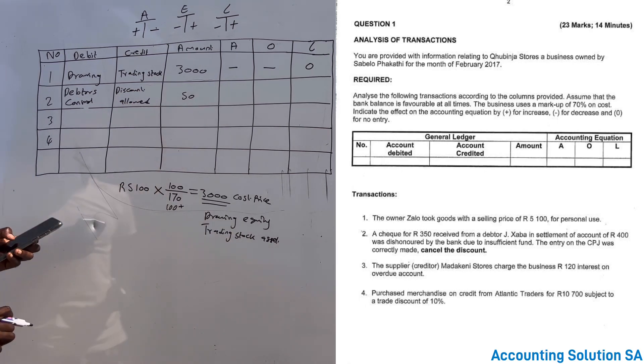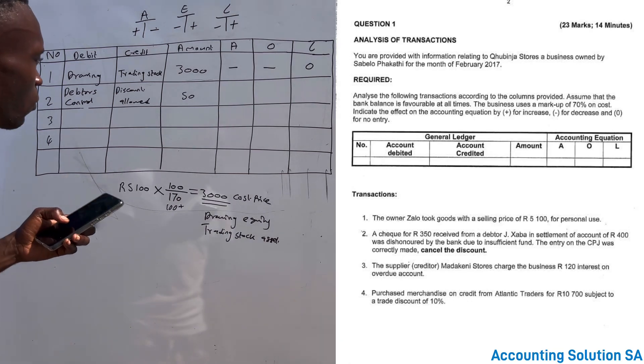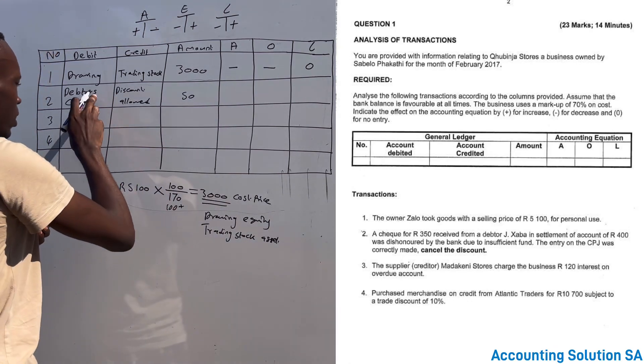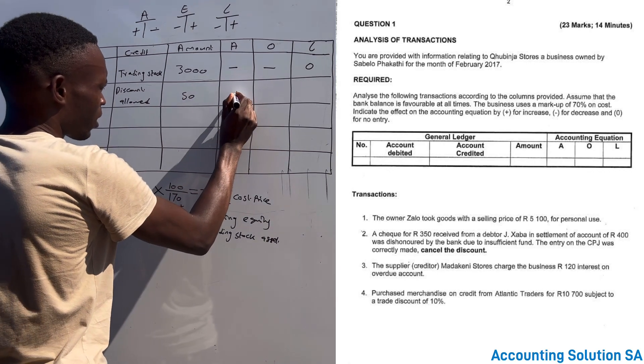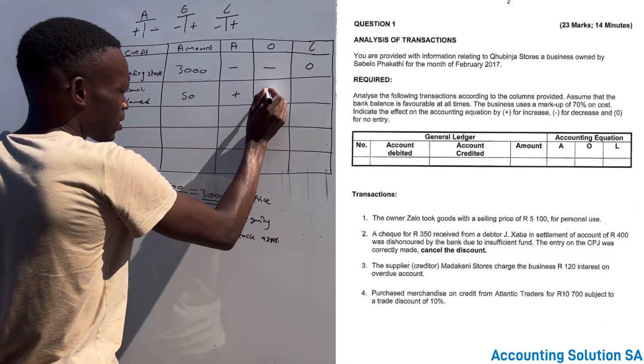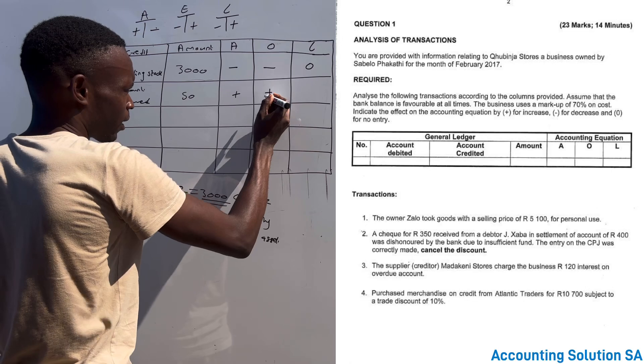In other words we are reversing. We are doing a reversal. When we do a reversal, the debtors control obviously is now going to increase back, and this expense is also going to increase back, and this side will be unchanged.